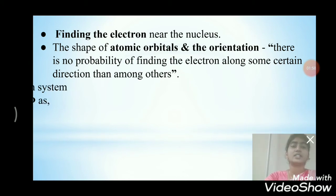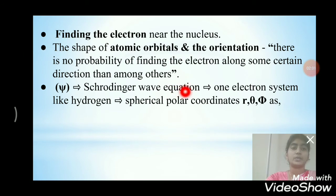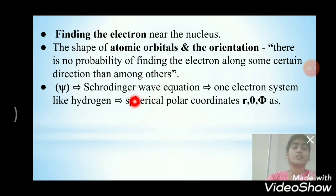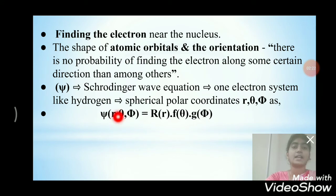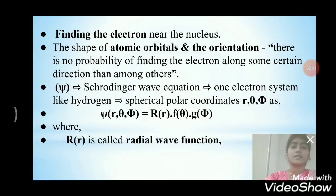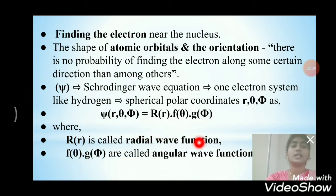The solution psi of the Schrödinger wave equation for a one-electron system like hydrogen can be represented in spherical polar coordinates R, theta, phi as: psi(R, theta, phi) = R · F(theta) · g(phi), where R is called the radial wave function and the other two terms are called the angular wave function.